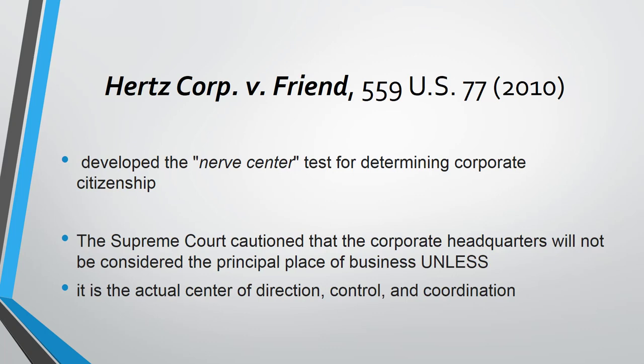Another US Supreme Court case, Hertz v. Friends, developed the concept of a 'nerve center.' Corporations are born in one place — maybe Delaware, California, or Washington State — but they do business or are headquartered elsewhere. Headquarters used to be just where meetings happen, not where executives function. Hertz said that when determining where corporations are citizens, we should look for the nerve center. The nerve center of your body is your spinal cord, connecting your head to the rest of the body.